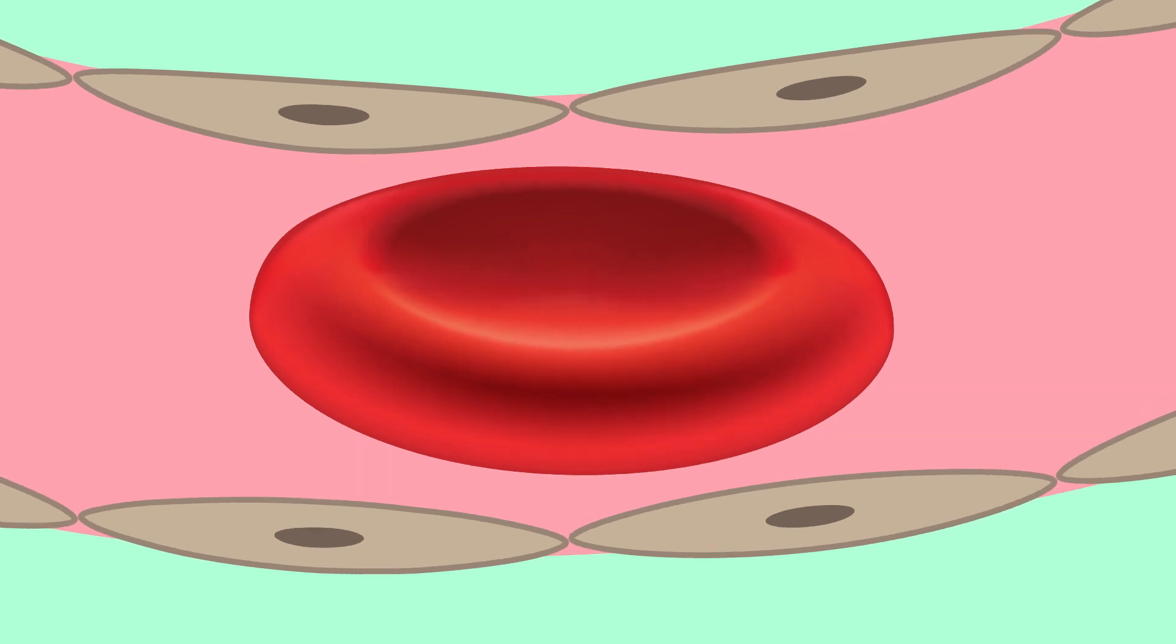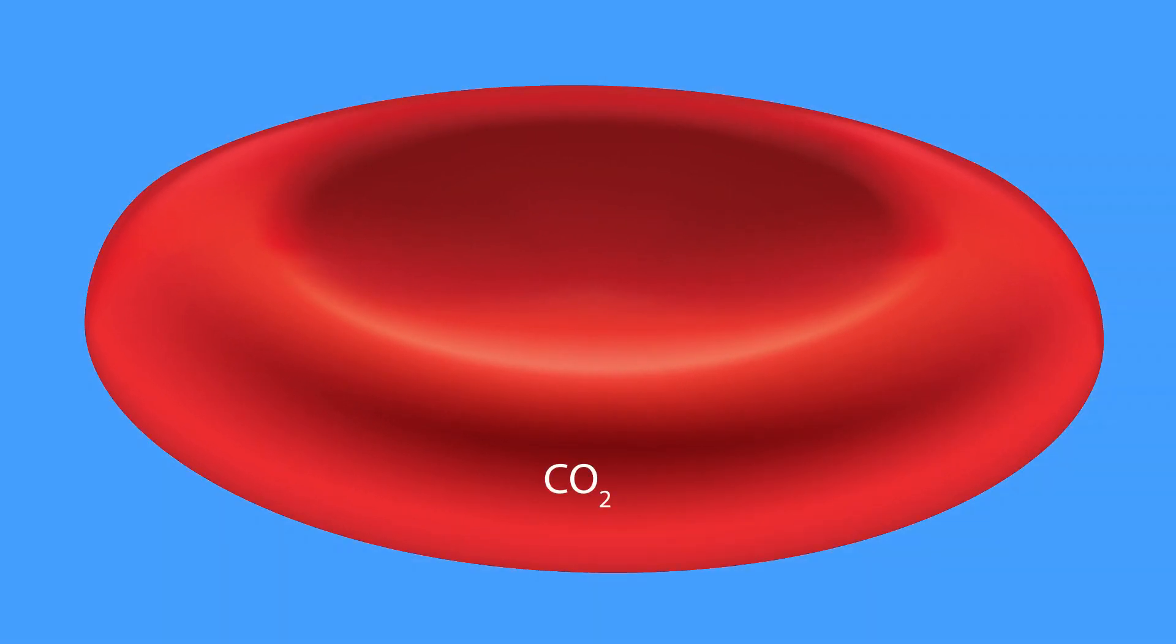Now, inside the red blood cell, 85% of the carbon dioxide combines with water and is rapidly converted into carbonic acid by the enzyme carbonic anhydrase 1, or CA1 for short. Following this reaction, carbonic acid is rapidly and spontaneously converted into bicarbonate and hydrogen ions.